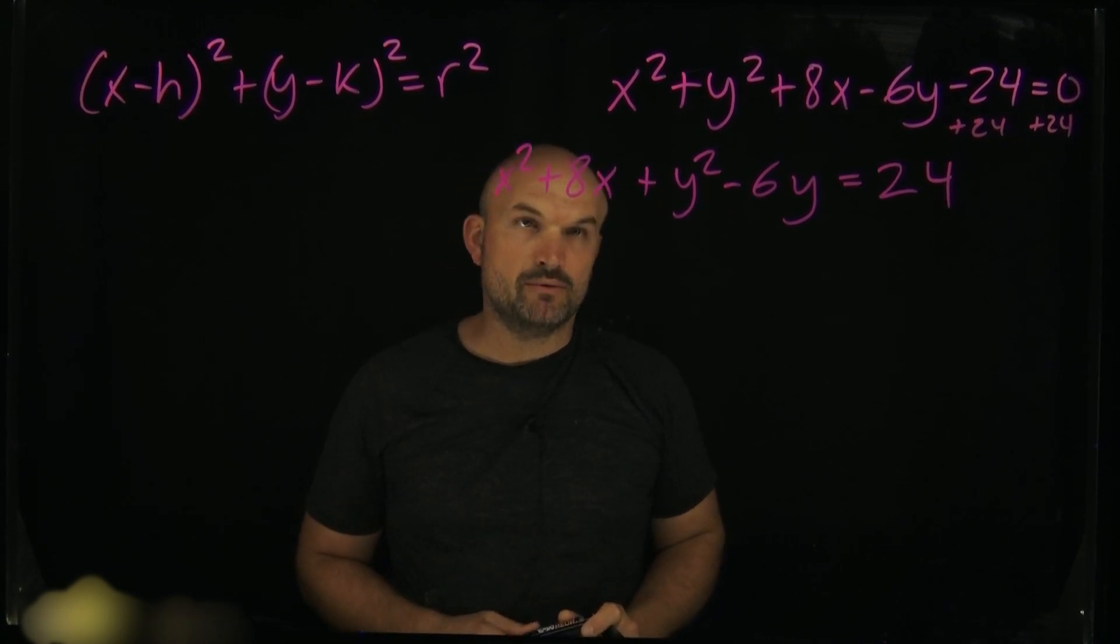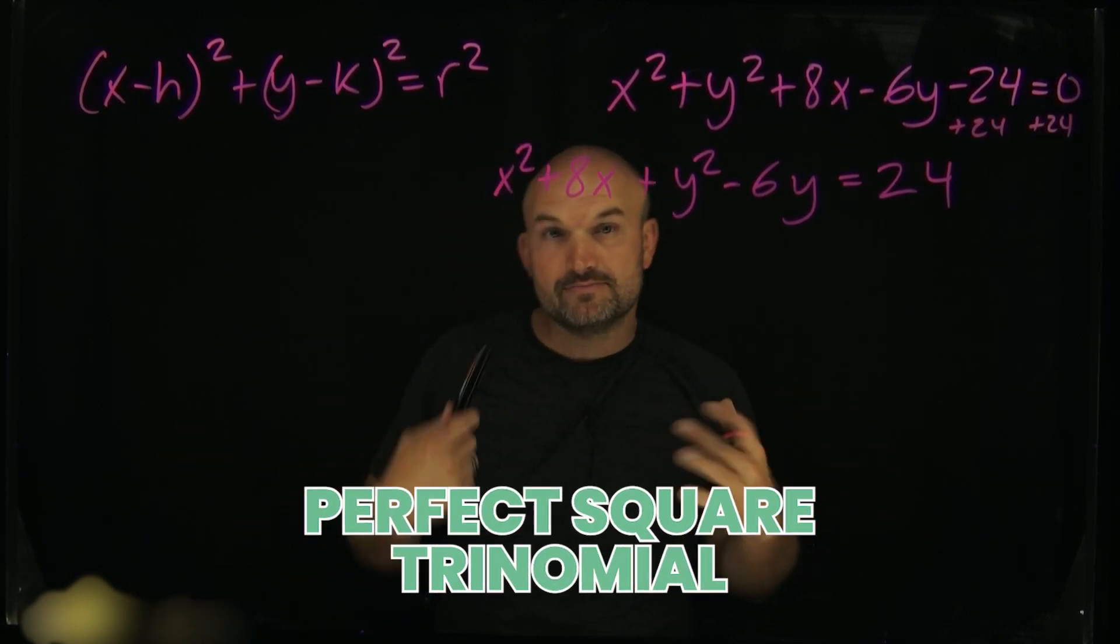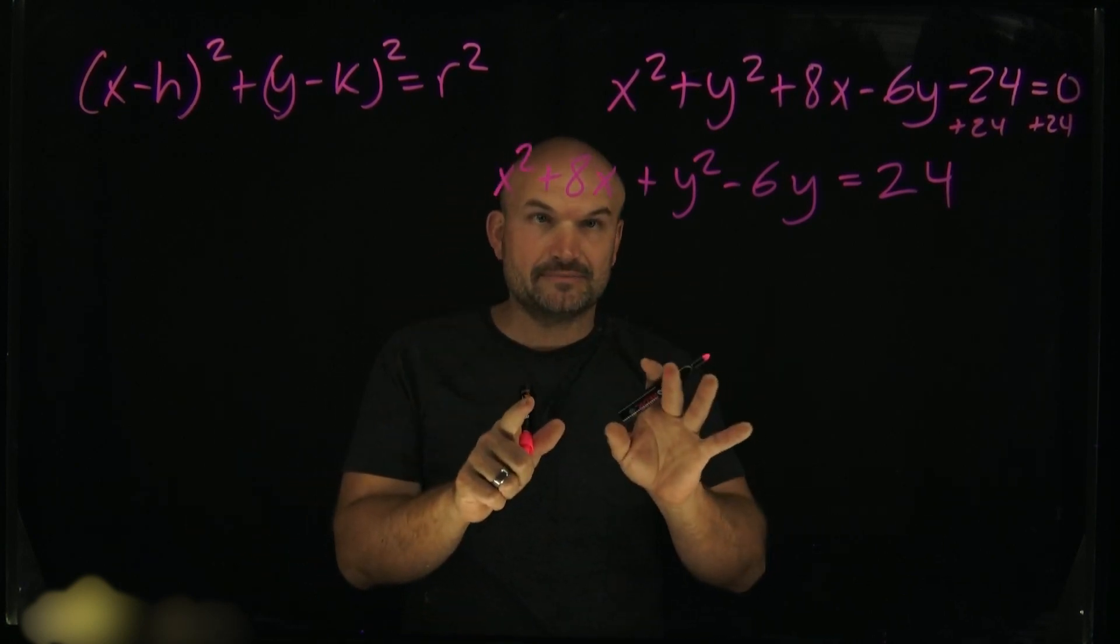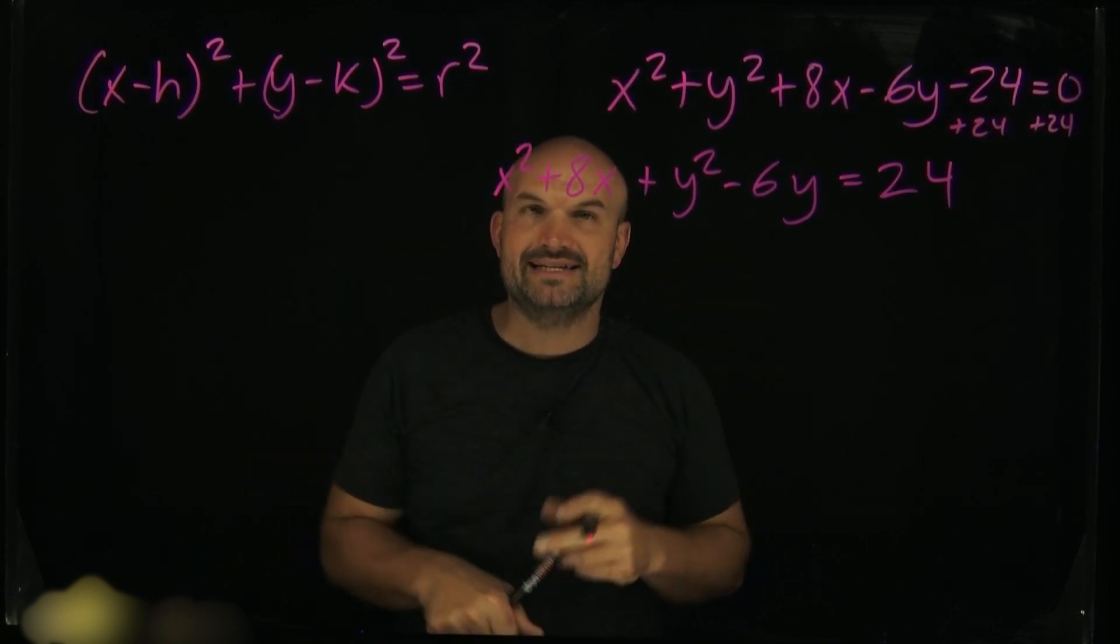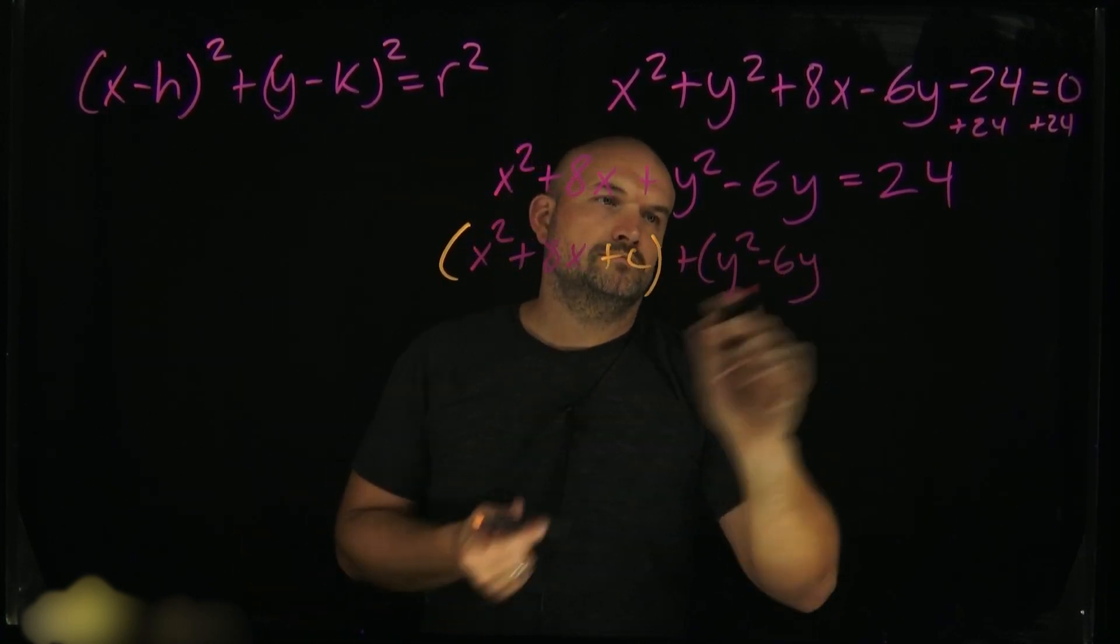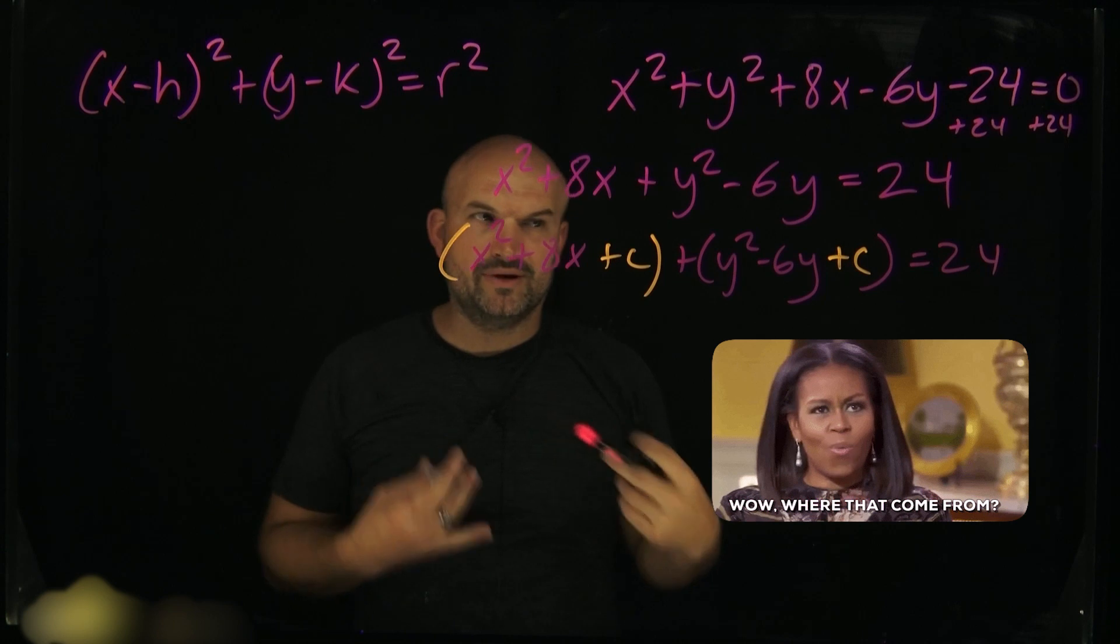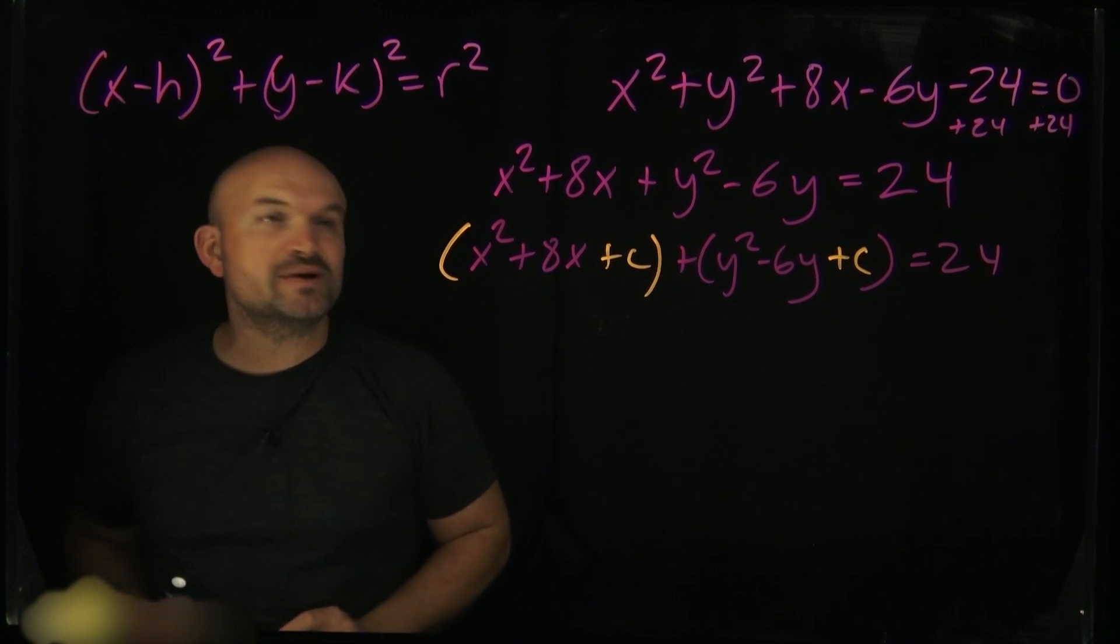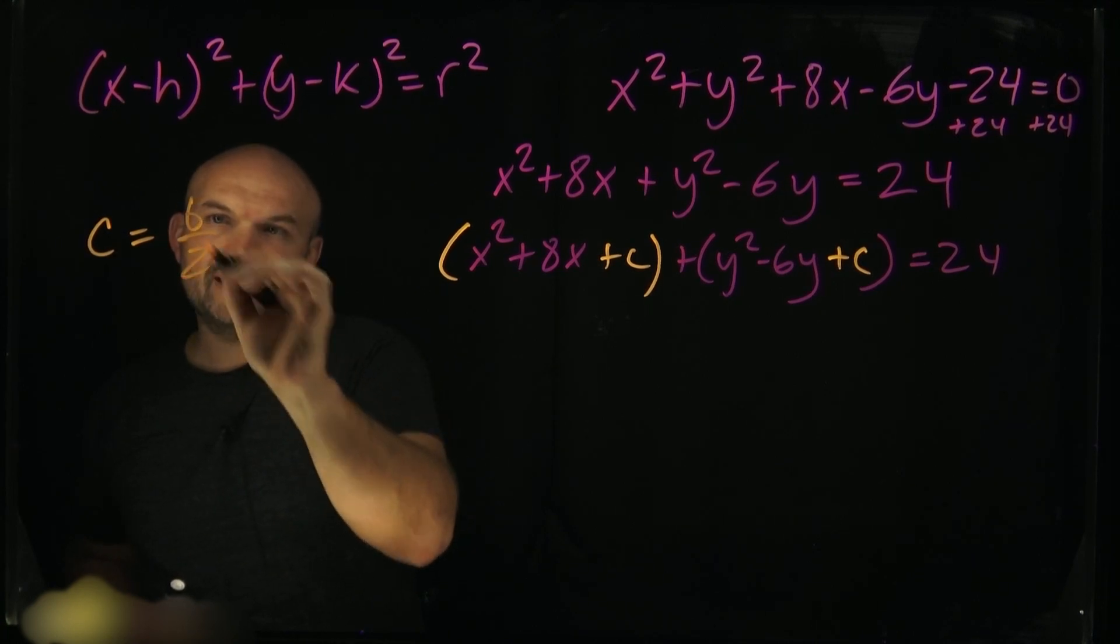Now what we need to do is complete the square. We need to find the value, a lot of times we call it c, that is going to create a perfect square trinomial, because perfect square trinomials can be factored into binomial squared. I'm going to rewrite these and write them with a c so you can get a visual idea of what we're trying to achieve. Students get confused - where's the c come from? What does c represent? How do you find c? Well, remember, when we're completing the square and we're trying to find this value that creates the perfect square trinomial, and we're given these two terms, c is just going to be b divided by 2 squared.